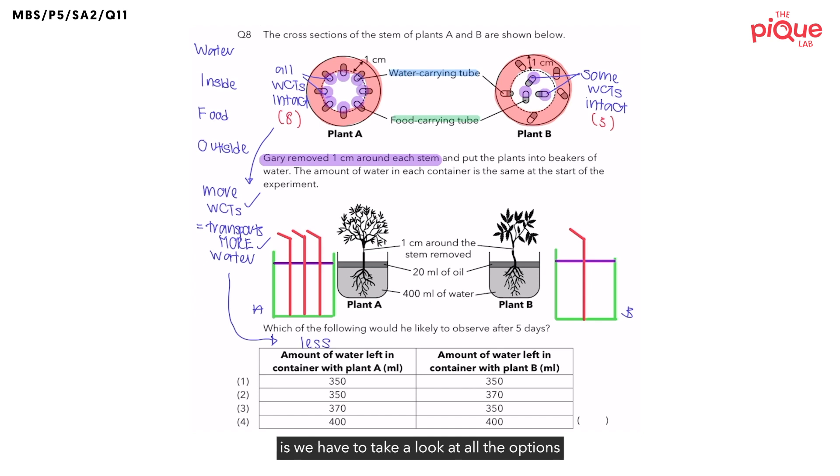So, the way to answer this question is we have to take a look at all the options and see which option tells us that the amount of water left in the container with plant A is less than the amount of water left in the container with plant B. And there's only one option that tells us this, and that is option number 2. So, therefore, the correct answer for this question is option number 2.